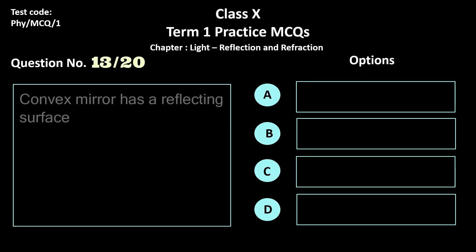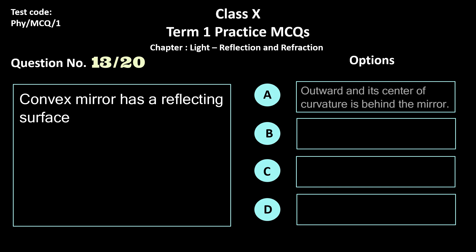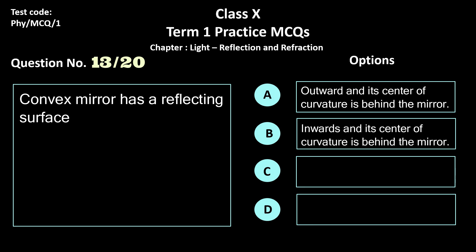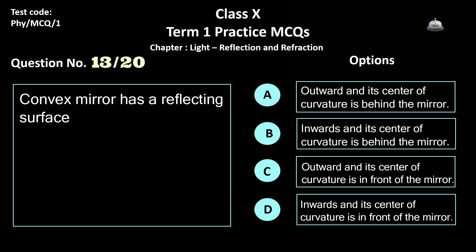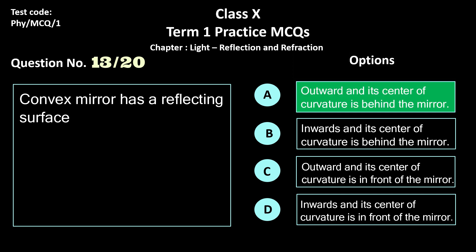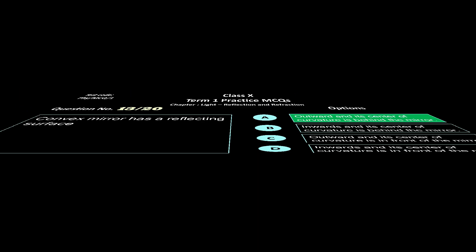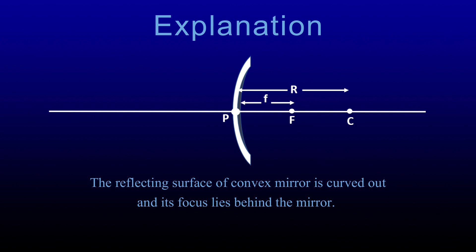Question 13. A convex mirror has a reflecting surface — options: a) outwards and its center of curvature is behind the mirror, b) inwards and its center of curvature is behind the mirror, c) outwards and its center of curvature is in front of the mirror, and d) inwards and its center of curvature is in front of the mirror. The correct answer is option a. A convex mirror has a surface which bulges outward, and its focus and center of curvature lie behind the mirror.